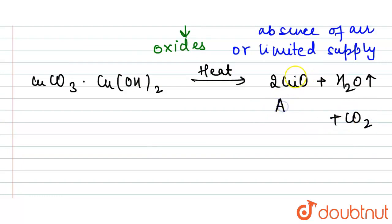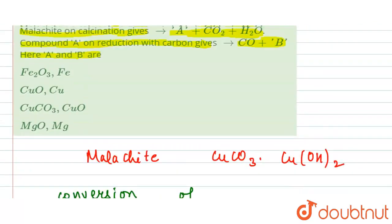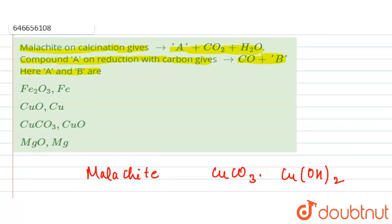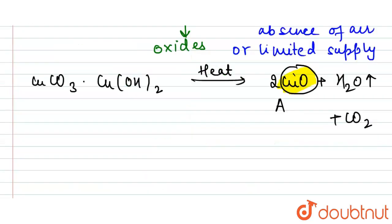So in this, our A is CuO. Now we have got A, which is CuO. Now we need to find out B.